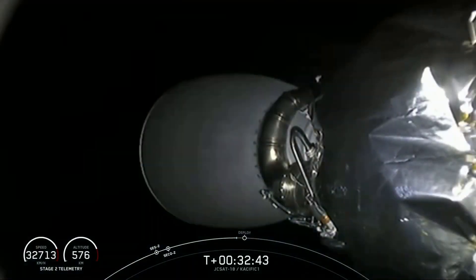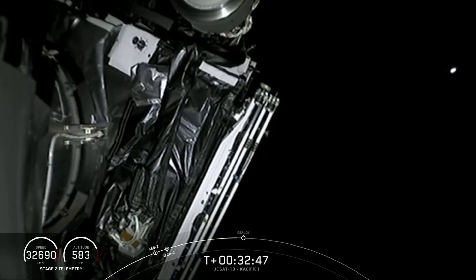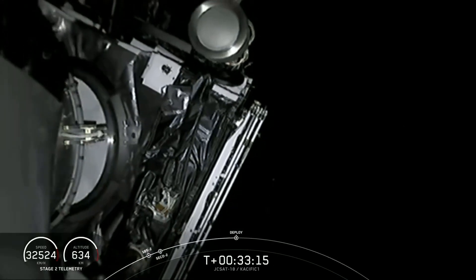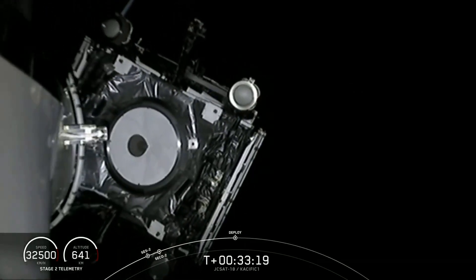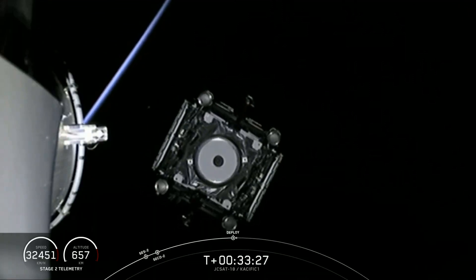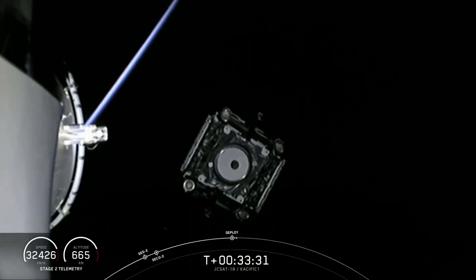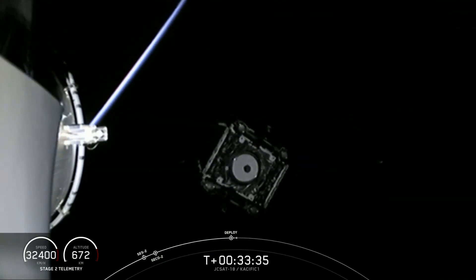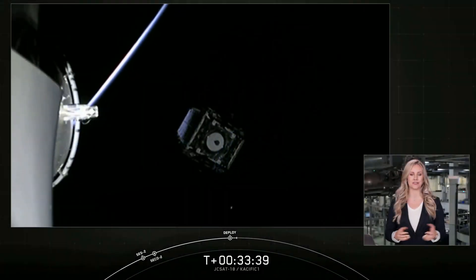Welcome back. Second stage is currently over Africa, and in about 20 seconds we'll have payload deployment. There on your screen you see the deployment of JCSAT-18 Pacific-1. I always love watching as the satellite floats away from second stage out into space. This was geostationary transfer orbit. With that confirmation of deployment, we will bring our webcast to a close.